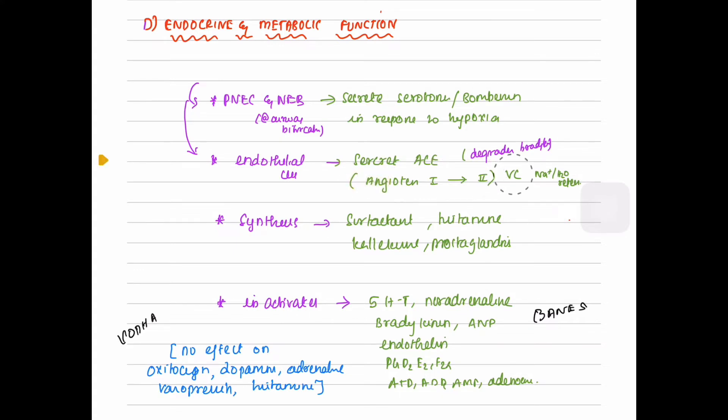Angiotensin converting enzyme degrades bradykinin. The lung synthesizes surfactant, histamine, kallikrein, and prostaglandins.